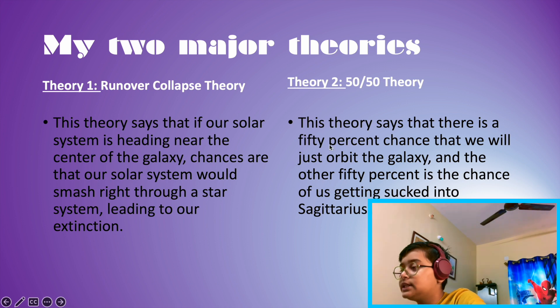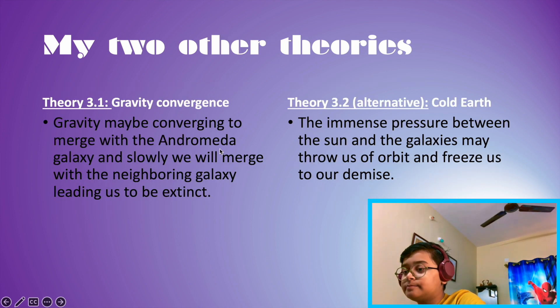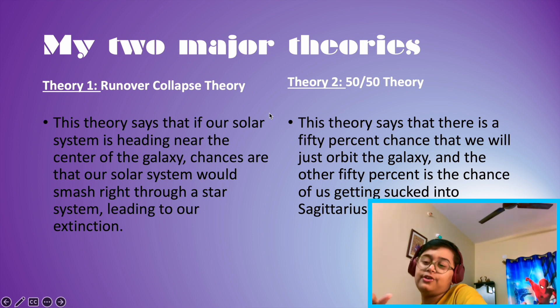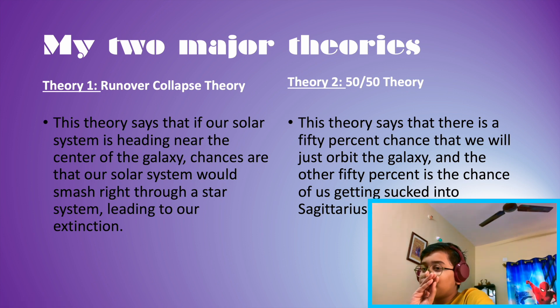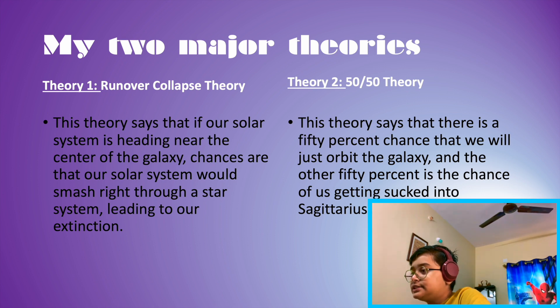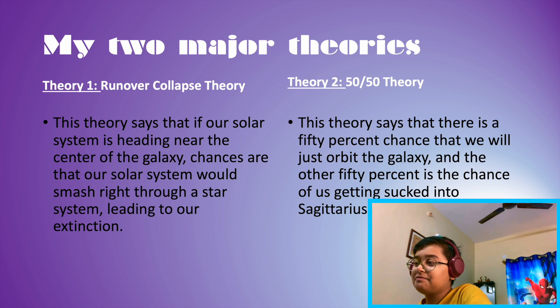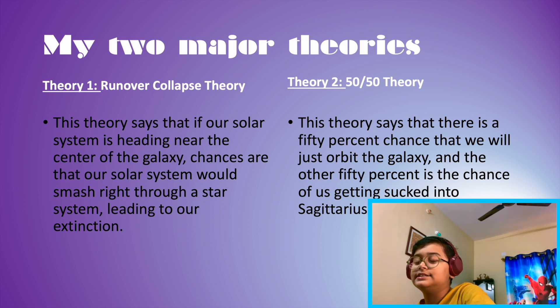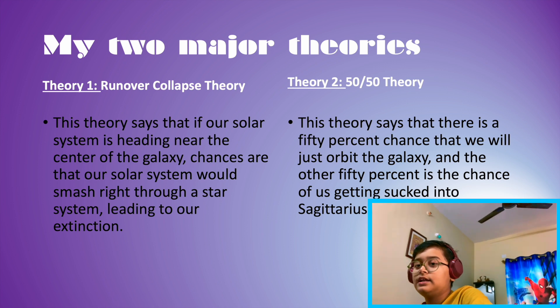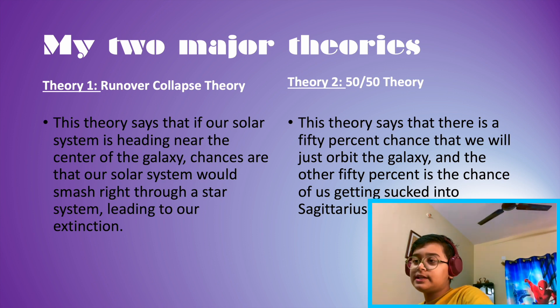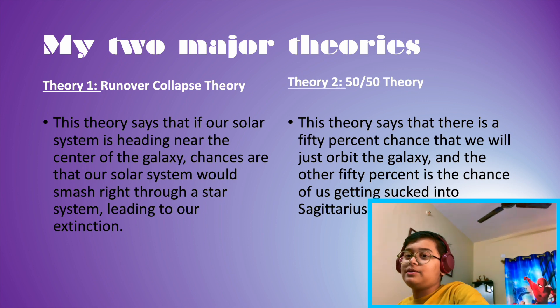50-50 theory. So 50-50 theory is that there is a 50% chance we'll just stay normally in an orbit, and then the other 50% chance is that we get sucked into Sagittarius A in a thousand years. That's pretty not bad because humans will have developed stuff to save themselves. Maybe. I don't know.